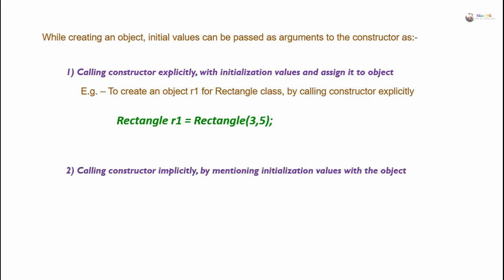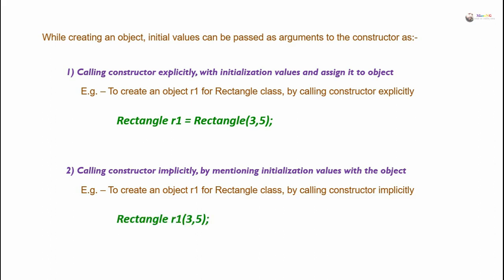The second approach is calling the constructor implicitly by mentioning initialization values with the object. To create an object R1 for the Rectangle class by calling the constructor implicitly, R1 is the object and the parameter values are mentioned directly with the object name. There is no explicit call to the constructor — it will get called automatically, and this is called an implicit call.